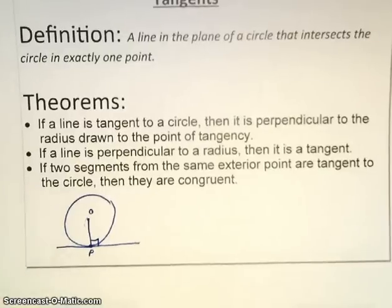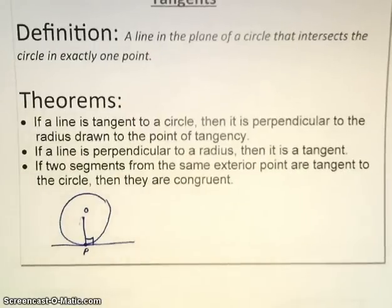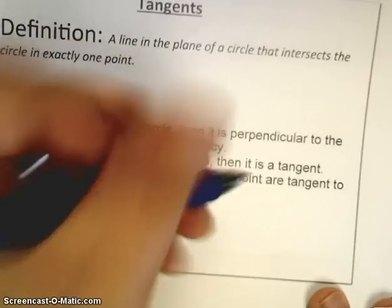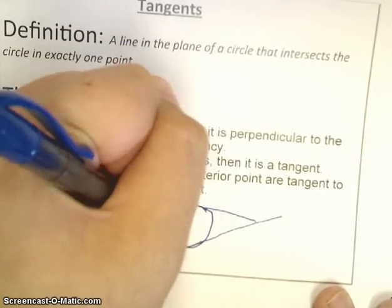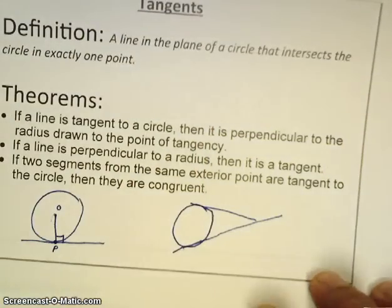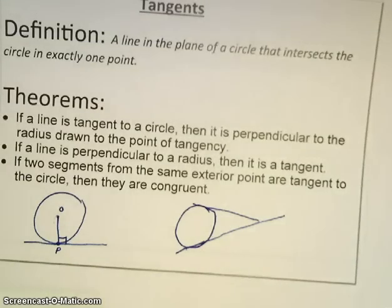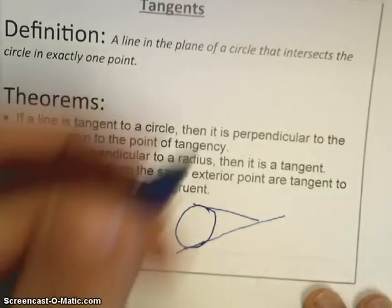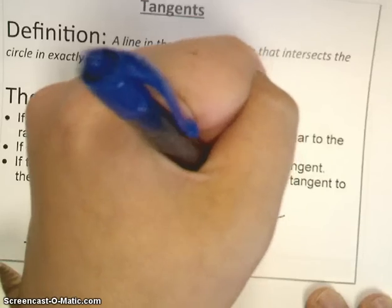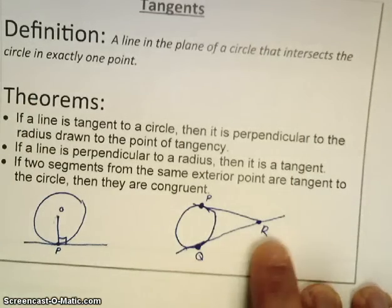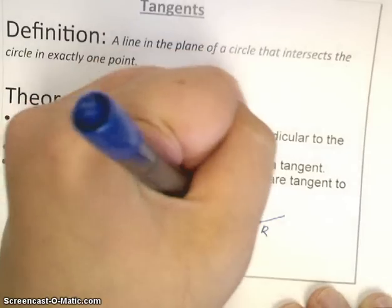The second theorem is just the converse of what we just said. So, if you know a line is perpendicular to a radius, that line is considered a tangent line. And finally, if two segments from the same exterior point are tangent to the circle, then they are congruent. So if I have two tangent lines drawn here as such, this segment right here, so here's my point of tangency P, here's my other point of tangency, we'll call it Q, and they intersect at this point R. The length of QR and the length of PR are going to be congruent according to this last theorem.